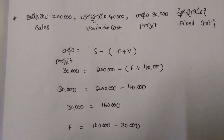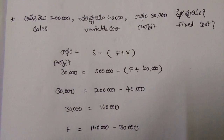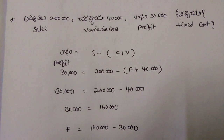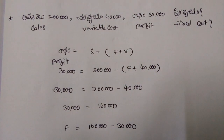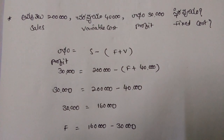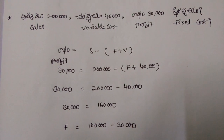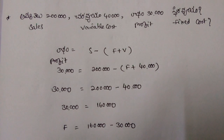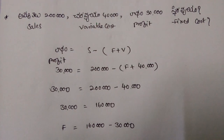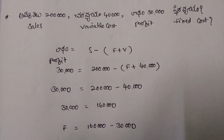So here, very short problem. Sales are 2 lakhs, Variable Costs are 40,000, Profit is 30,000. So calculate Fixed Cost. Profit equals to S minus F plus V, where S means Sales, F is Fixed Cost, V is Variable Cost.